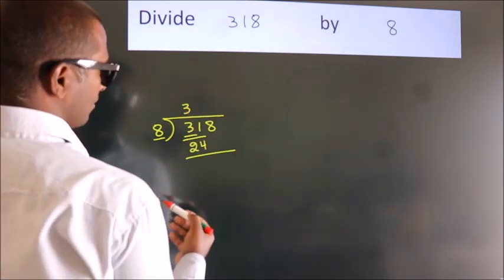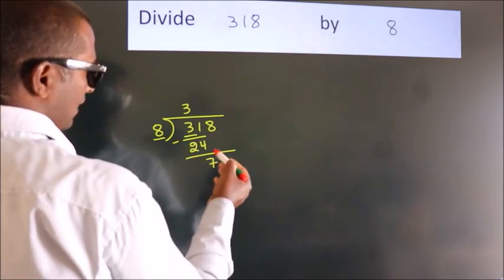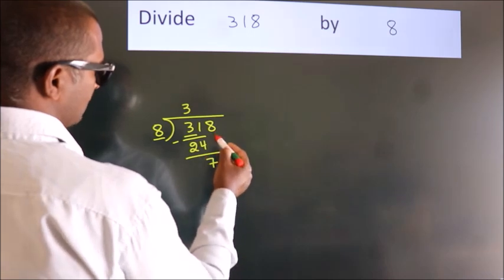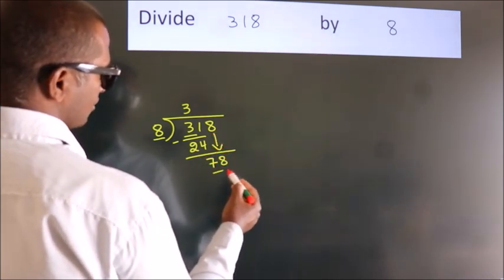Now, we should subtract, we get 7. After this, bring down the beside number. So, 8 down. So, 78.